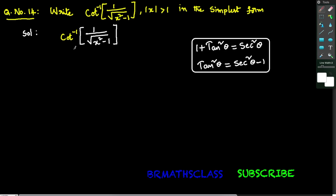To write the simplest form of cot inverse of 1 divided by root of x squared minus 1, I'll take x equals secant theta. Let x equal to secant theta. If x equals secant theta, from this we can write theta equals secant inverse x.